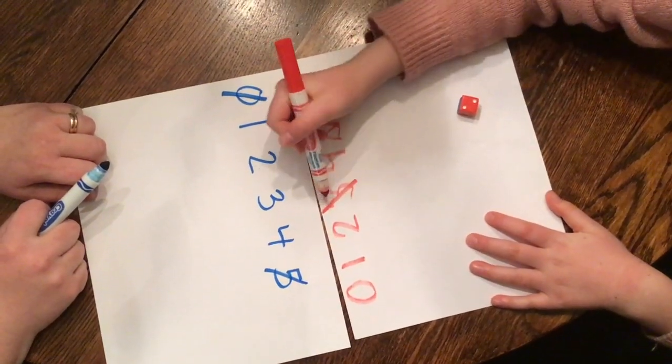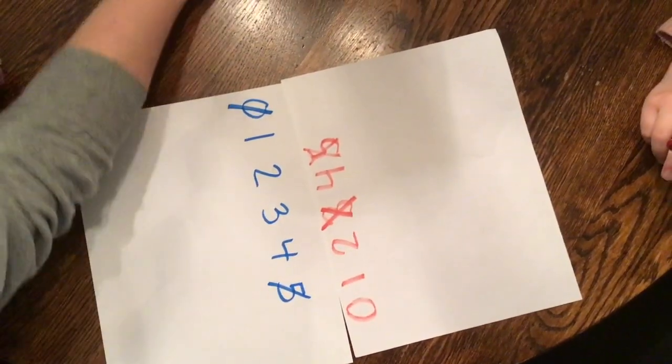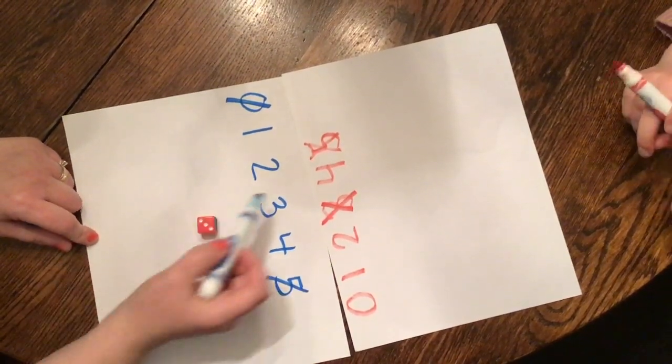Why are you crossing out three? Because three is the partner for two to make five. Thank you. I got a three, so now I'm going to cross out two, because three plus two makes five.